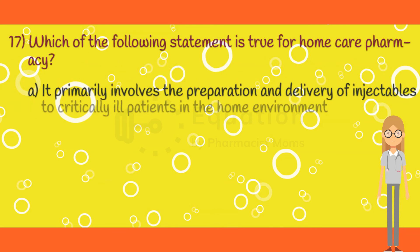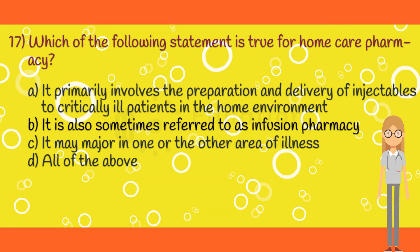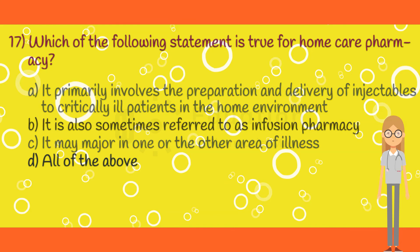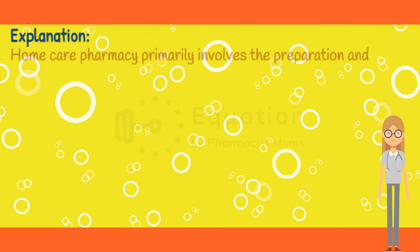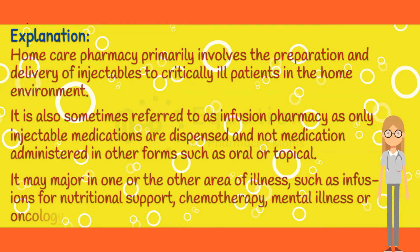Question 17. Which of the following statement is true for home care pharmacy? Option A: It primarily involves the preparation and delivery of injectables to critically ill patients in the home environment. Option B: It is also sometimes referred to as infusion pharmacy. Option C: It may major in one or the other area of the illness. Option D: All of the above options. The correct answer is option D. Home care pharmacy primarily involves the preparation and delivery of injectables to critically ill patients in the home environment. It is also sometimes referred to as infusion pharmacy as only injectable medications are dispensed and not medication administered in other forms such as oral or topical. It may major in one or the other area of illness such as infusions for nutritional support, chemotherapy, mental illness, or oncology.